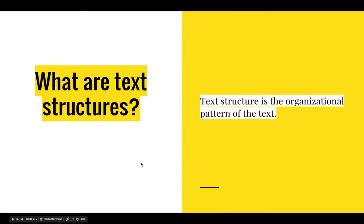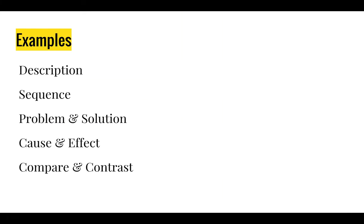So what are text structures? They are those organizational patterns that we see in text. Examples of these are description, sequence, problem and solution, cause and effect, compare and contrast.